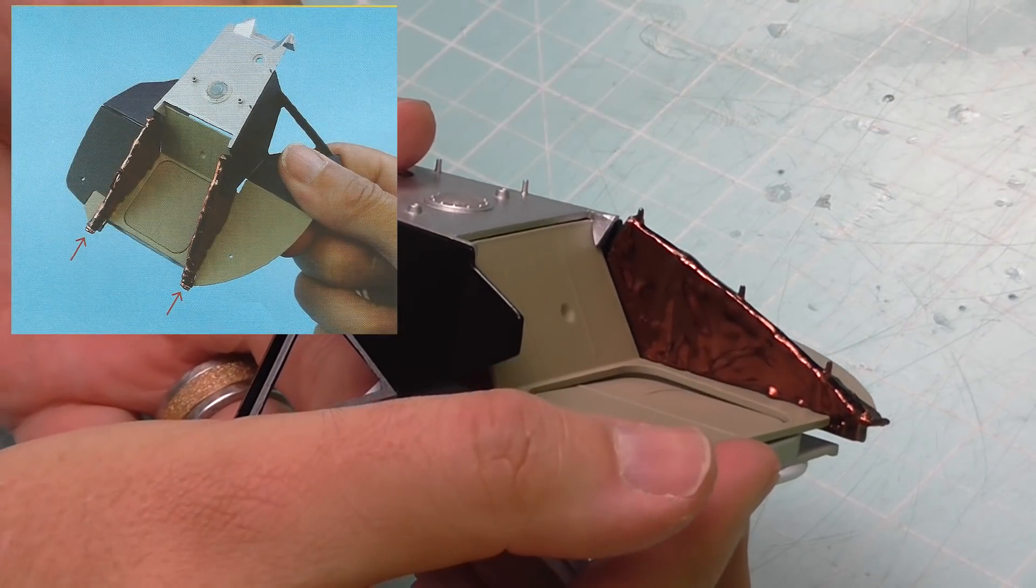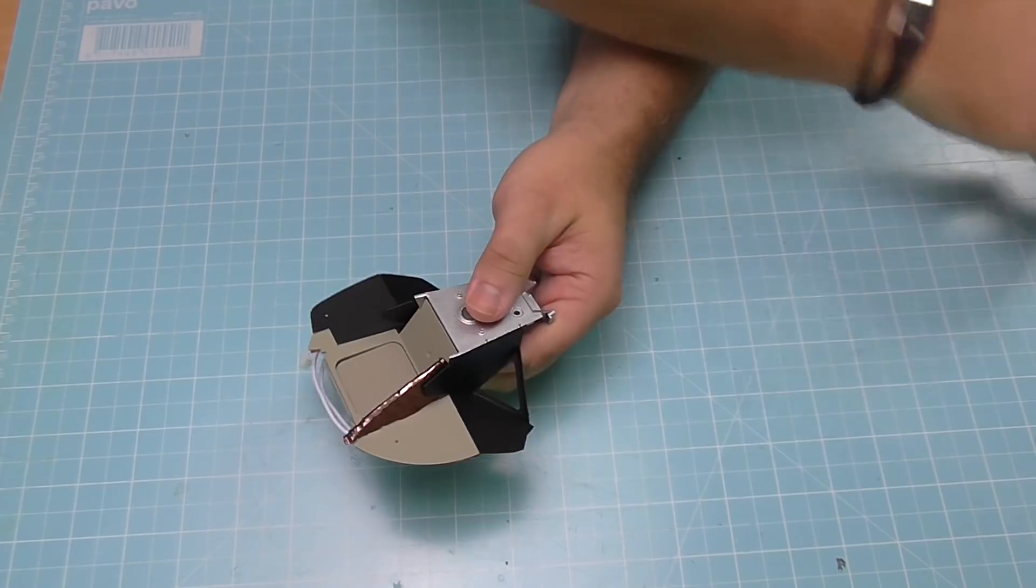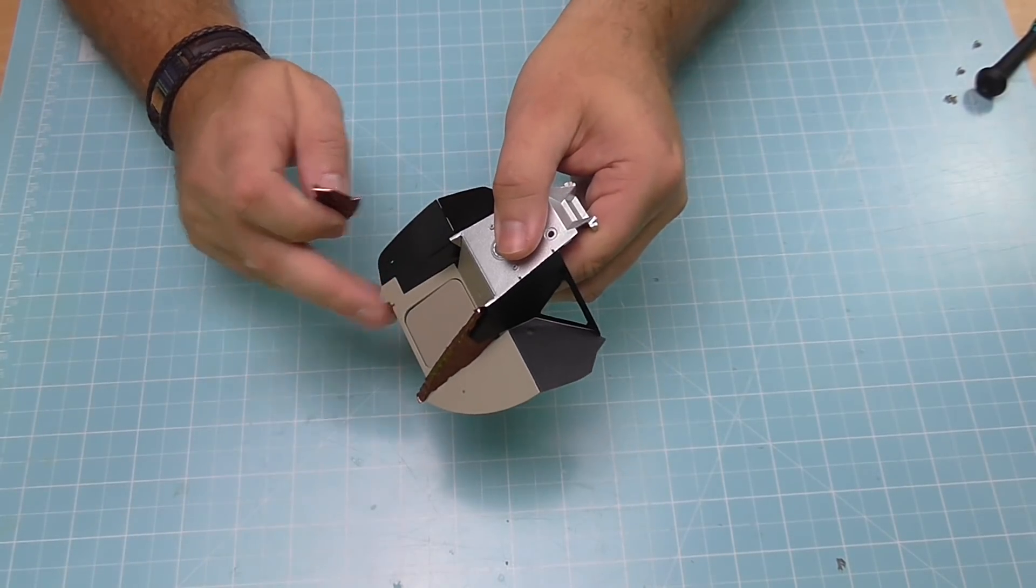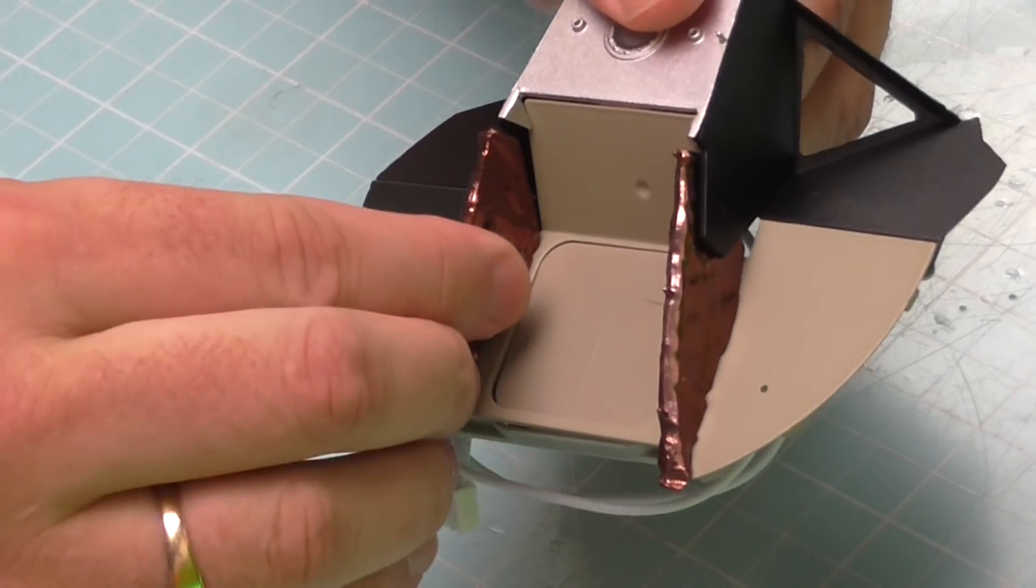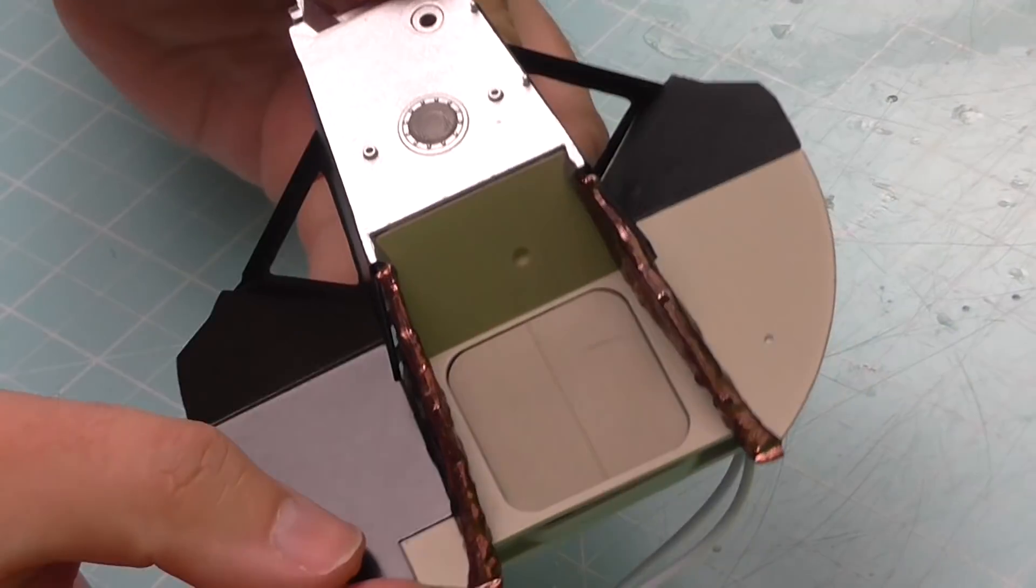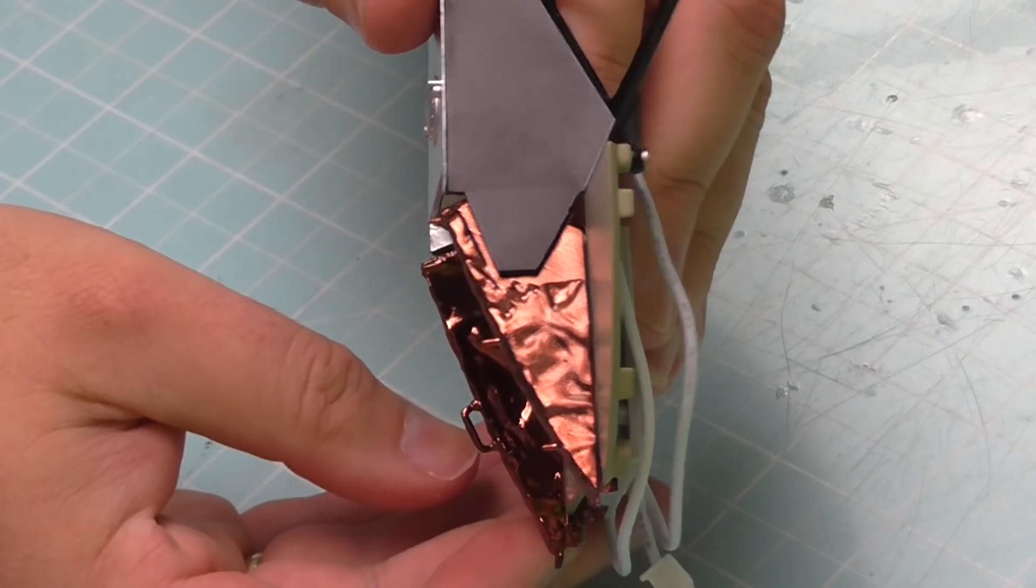On that side there. So we do the same with the other side. Again we've got a notch just down there. So we put that in there and then slide it up, simple as that. But you see these are only covering those sections there.